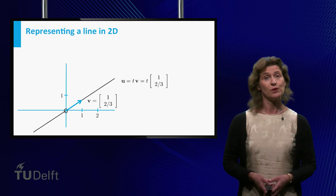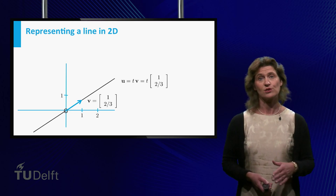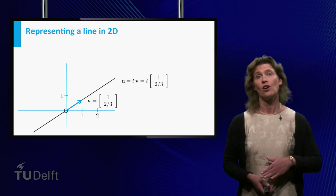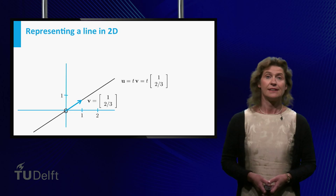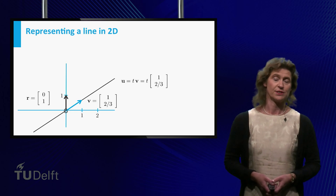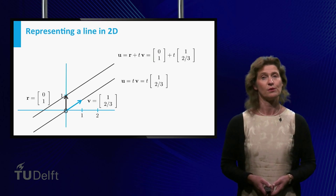If you want to return to the line we started with, all you need to do is translate all vectors on the line through the origin over the vector corresponding to the starting point. In this example, the starting point is (0,1), so the original line can be described as r plus t times v, where t is a scalar.